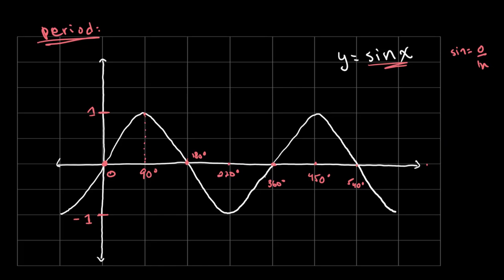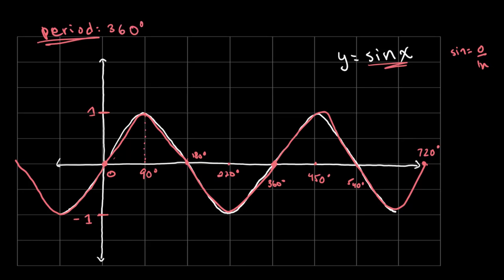The period of this graph is 360 degrees, because for the graph to repeat itself you have to go over this whole area of 360 degrees, then you're back at 0 and the graph does the same thing again. On the negative side it'll just repeat the same exact pattern. So the period is 360 degrees — it reaches its maximum at 90 degrees, and then again at 450 degrees, and 360 degrees after that.